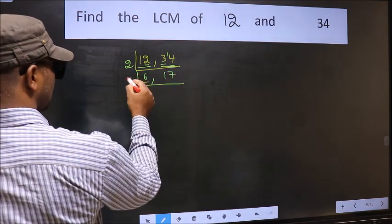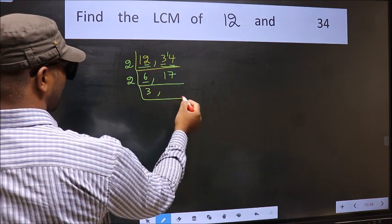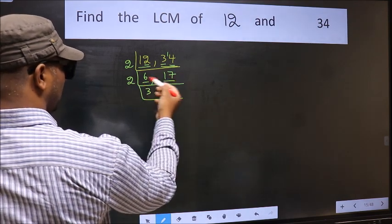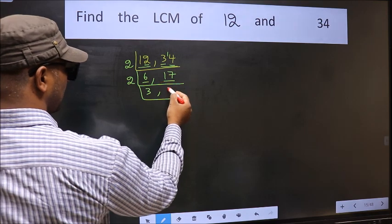Now, here we have 6. 6 is 2, 3 is 6. The other number 17, not divisible by 2. So we write it down as it is.